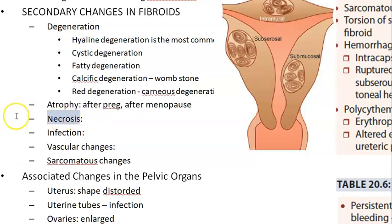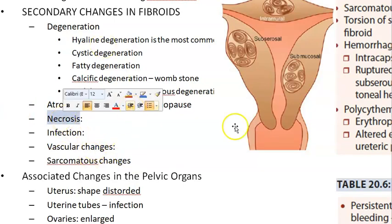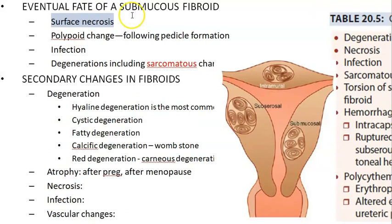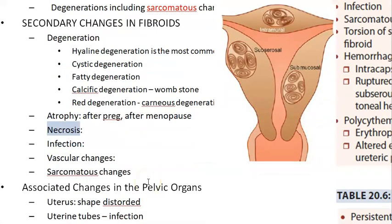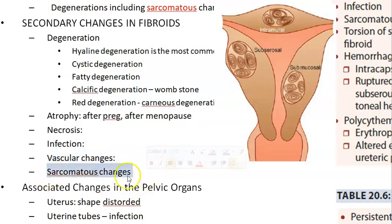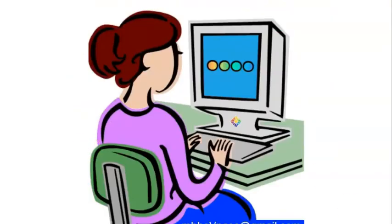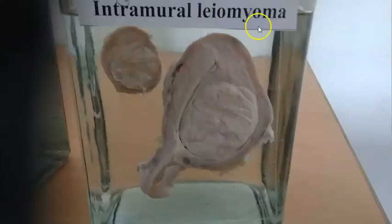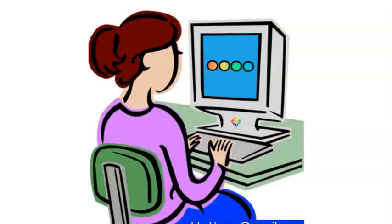Other secondary changes include necrosis and infection. Vascular changes include dilatation of vessels — telangiectasis — and dilatation of lymphatic channels — lymphangiectasis. Then there is sarcomatous change, which is very rare, but it can become leiomyosarcoma. Based on mitotic figures you can decide whether it is progressing to sarcoma. What you see as a myoma is not leiomyosarcoma yet.